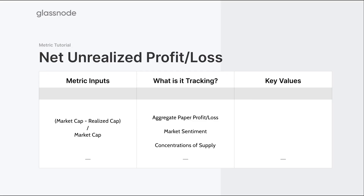The metric tracks the aggregate paper profit or loss within the system. We can also correlate this by looking at previous market fractals — what happened before and after those events — to understand market sentiment, whether we're in bullish markets, bearish markets, or a transitional phase such as a capitulation or a blow-off top.